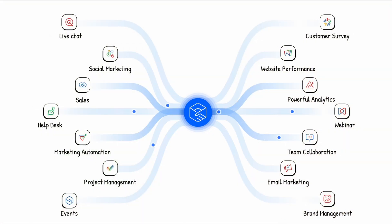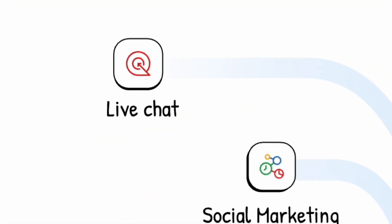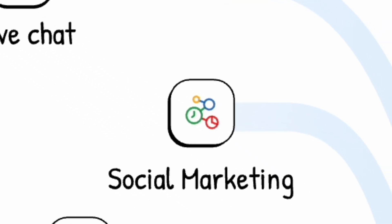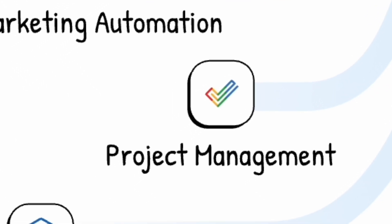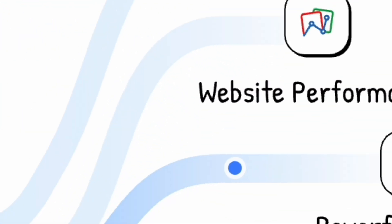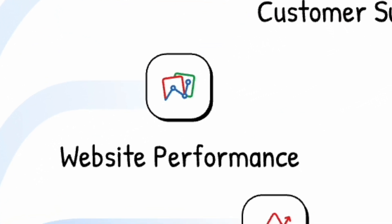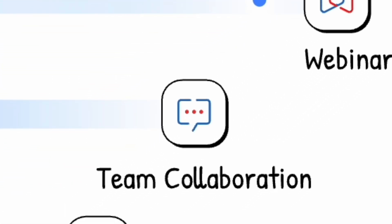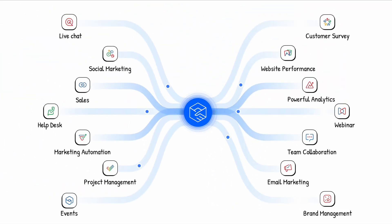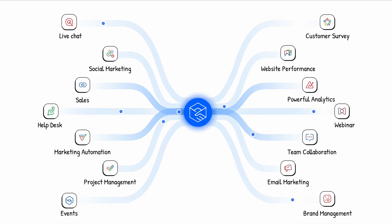Zoho CRM Plus includes different types of apps: live chat, social marketing, sales, help desk, marketing automation, project management, events, customer service, website performance analytics, powerful BI analytics, webinars, team collaboration, email marketing, and brand management. As you can see, it's a perfect starting point for any business because it covers a wide variety of business needs.